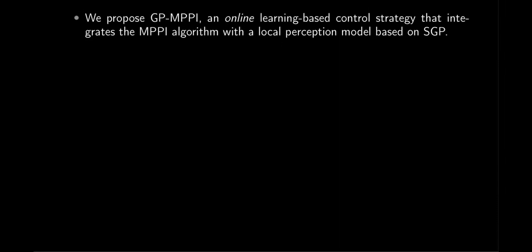In this work, we propose GP-MPPI, an online learning-based control strategy that integrates the model predictive path integral control algorithm, MPPI, with a local perception model based on sparse Gaussian process, SGP.